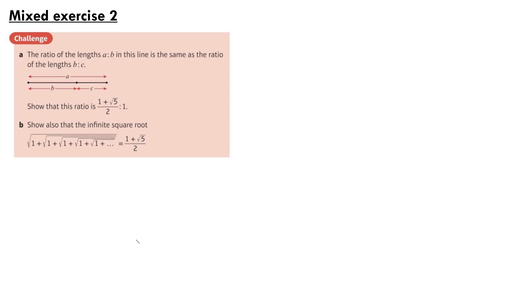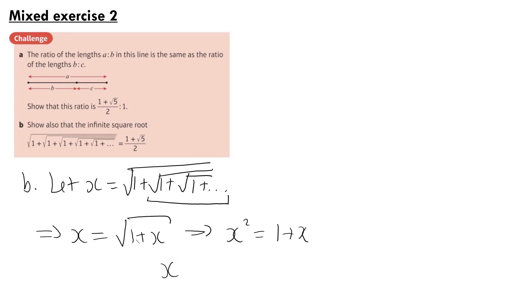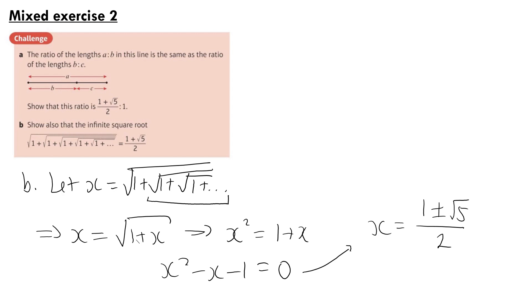For part B: show that the infinite nested square root √(1 + √(1 + √(1 + …))) equals (1+√5)/2. We let x equal this infinite expression. The expression inside the square root is itself the same infinite expression, so it equals x. Therefore x = √(1 + x). Squaring both sides: x² = 1 + x, giving x² - x - 1 = 0. Solving: x = (1 ± √5)/2. Since x is a square root it must be positive, so x = (1 + √5)/2. And that is the end of the challenge question walkthrough for Chapter 2.